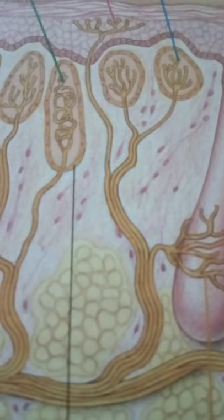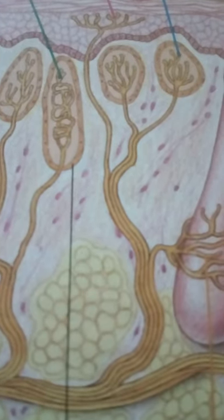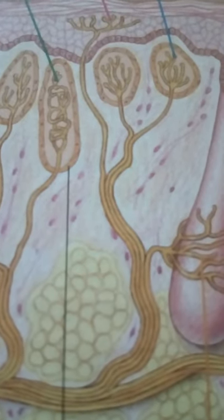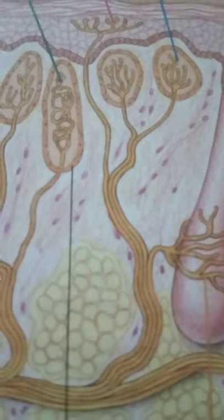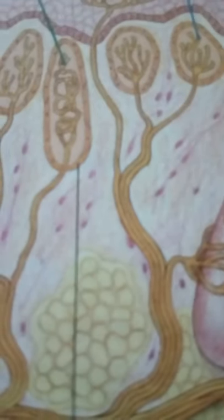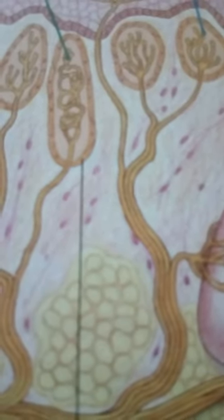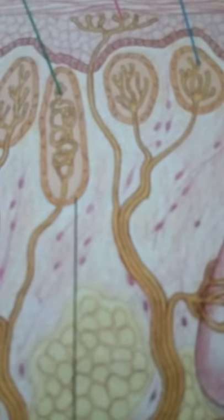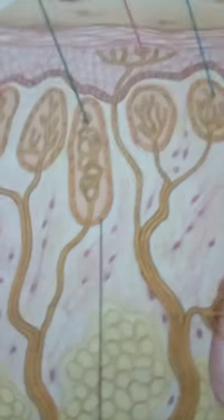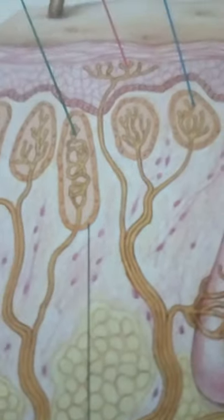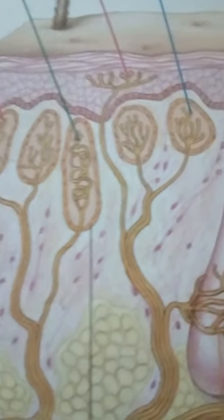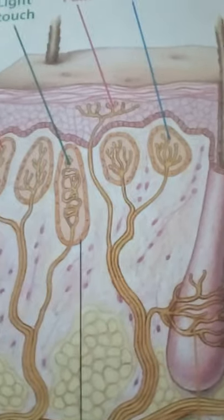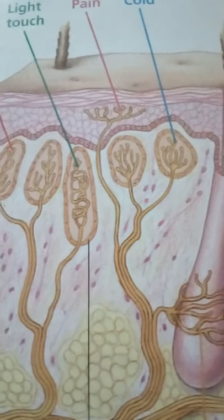Another example is the vertebrate stretch receptor, which monitors the length of skeletal muscles. The mechanoreceptors in this case are the dendrites of sensory neurons that spiral around the middle of small skeletal muscle fibers — muscle spindles, each containing about 2 to 12 of these fibers surrounded by connective tissue, distributed through the muscle. When the muscle is stretched, the spindle fibers are stretched, depolarizing sensory neurons and triggering action potentials that are transmitted to the spinal cord. Muscle spindles and the sensory neurons that innervate them are part of nerve circuits that underlie reflexes.